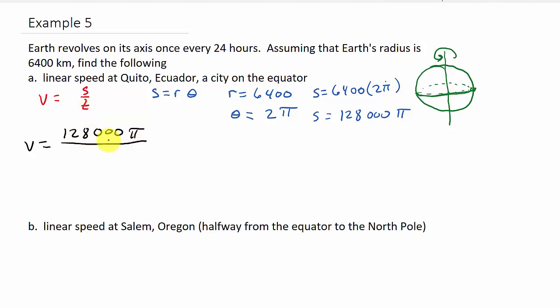Now let's get our linear velocity, which is S, which is 128000 pi over T. Remember this 128000 pi, which is S, that's arc length, right? S is R times theta. So how long did it take to travel S? Well, it told us 24 hours. One revolution took 24 hours. So our time T is 24.